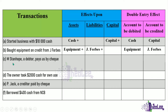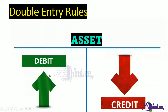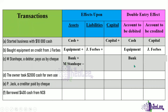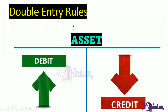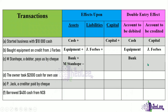Transaction C: M. Standup, a debtor, pays us by check. Bank is affected — there is an increase in bank because we received that amount. Bank is an asset; when asset increases, you debit. So the account to be debited is bank. M. Standup, the debtor, pays us, so there is a reduction in what the debtor owes us. When an asset decreases, you credit. So the item to be credited is M. Standup.